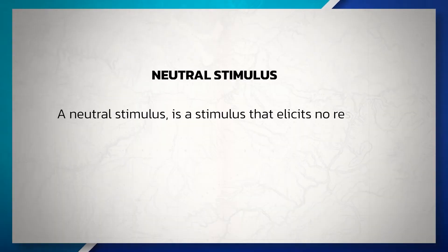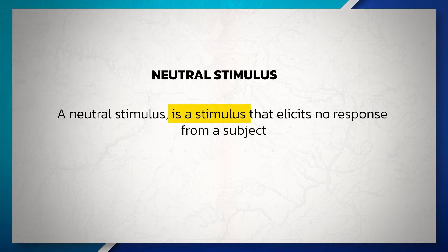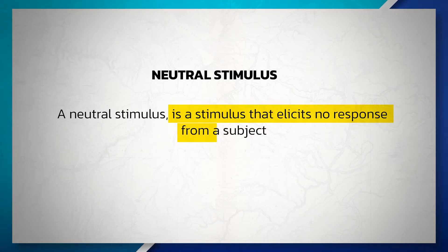A neutral stimulus is a stimulus that elicits no response from a subject. For instance, this light on the screen — if I had not said anything, you probably wouldn't have even thought about it. Here, the stimulus is observed, but it does not elicit a response.